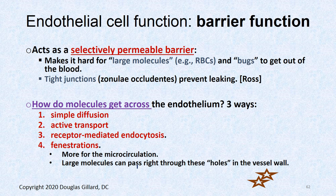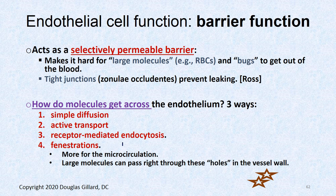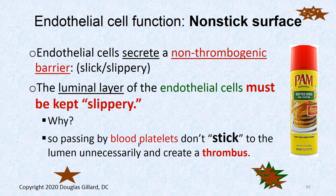Endothelial cells act as a semi-permeable barrier. If you get bugs in tissue, they won't get into the bloodstream, and vice versa — because of very strong tight junctions between endothelial cells. Ways to cross the endothelium include simple diffusion, active transport, receptor-mediated endocytosis, and fenestrations. The endothelial surface is kept slippery by secreted molecules so platelets don't stick and cause thrombus formation.